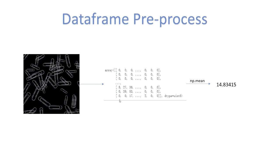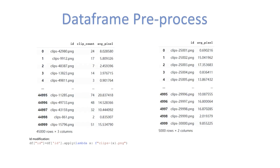After that we pre-processed the data frame — actually it's feature engineering. The black pixels are zero and the white pixels are around 80 or 160. We calculate the average pixel number; for this picture it's 14.83. Importantly, this feature is available not only for the training dataset but also for the test dataset. By calculating the average pixel of each picture, we can produce a train dataframe and a test dataframe, each with an average pixel count.